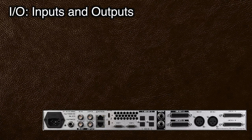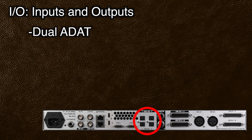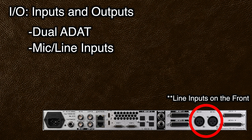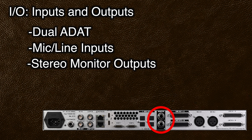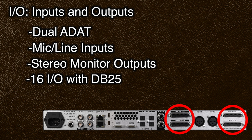Reason number one of why I chose the Avid Matrix Studio as my primary Dolby Atmos interface is because of the versatile IO already included without needing any additional hardware. IO stands for inputs and outputs. You have dual ADAT connections for input and output clocking between ADAT compatible interfaces, two switchable mic/line inputs, two outputs for a regular pair of stereo monitors, and 16 analog inputs and outputs that you can use with a DB25 cable — whether that be with TS, TRS, or XLR balanced cables.